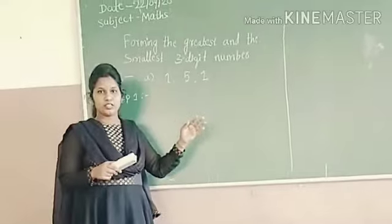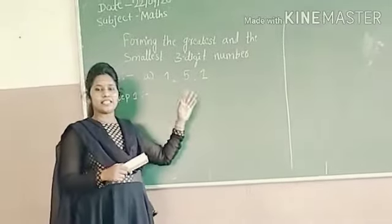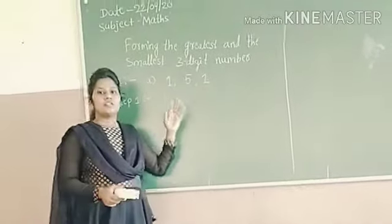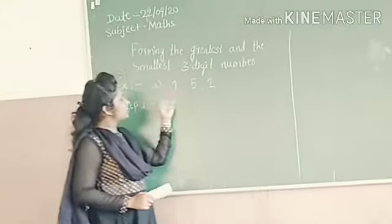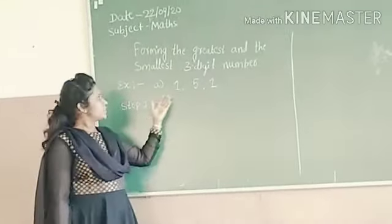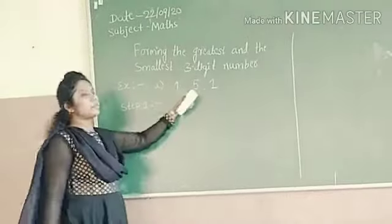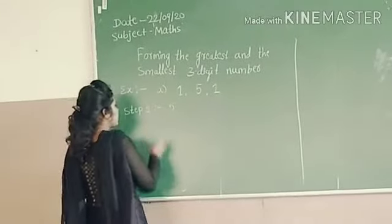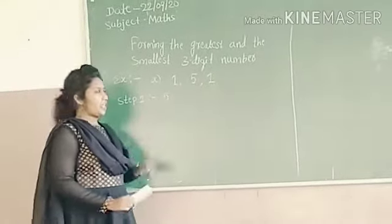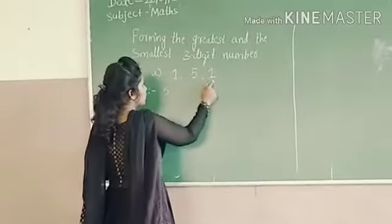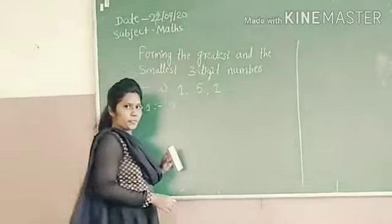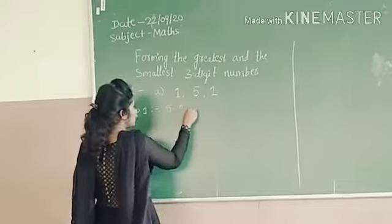To form the greatest number, first we have to rearrange these numbers in descending order. Descending means from the bigger number to the smaller number. Out of these 3 digits, which one is bigger? 5 is the bigger number, so I am writing 5. And among the remaining 2, both numbers are the same, so I am writing 1 and 1.